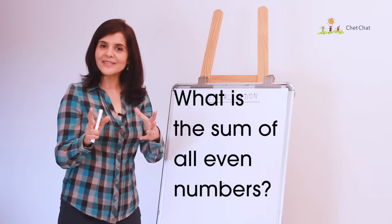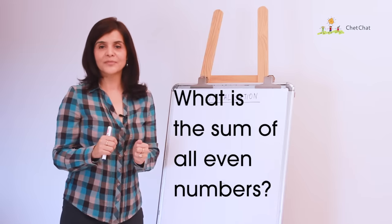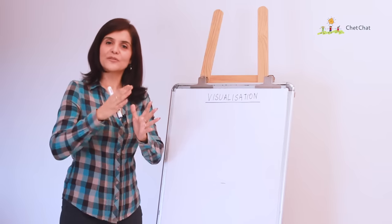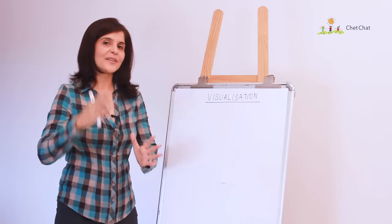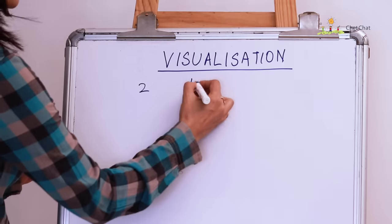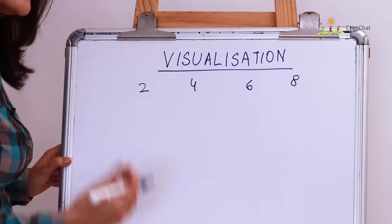Okay, so what is the sum of all even numbers from 0 to 100? Okay, let's break that down. What is the sum of all even numbers from 0 to 10? Now, there are 4 even numbers between 0 and 10 which are 2, 4, 6 and 8. Let's visualize these numbers.